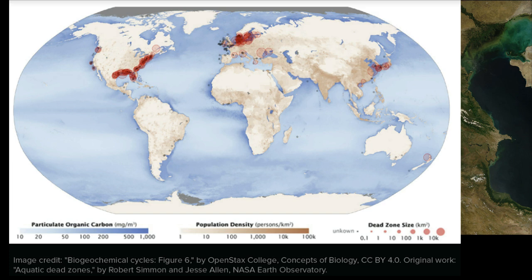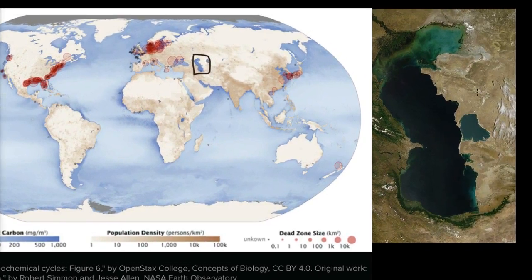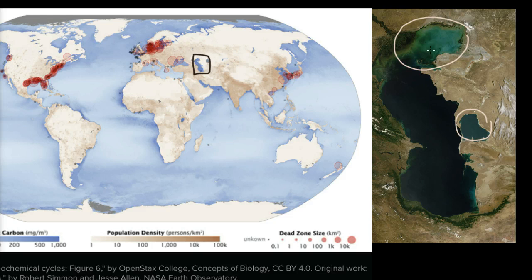If you zoom in on the Caspian Sea, you can see this in more detail — you can visually see the eutrophication in this satellite image. You can see the algal blooms throughout the area, making the water less clear. This is a serious ecological issue we have to think about. On one level, phosphates, fertilizers, and nitrates seem like a good thing because they help us grow more crops. But we have to be very careful about where they actually end up.